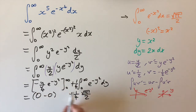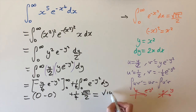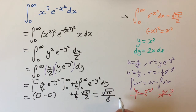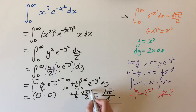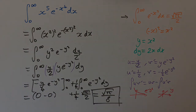Our answer is therefore one quarter times the square root of pi over 2, which simplifies to the square root of pi divided by 8. That's the solution to this integral.